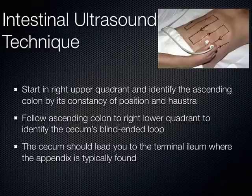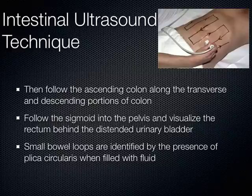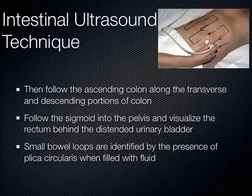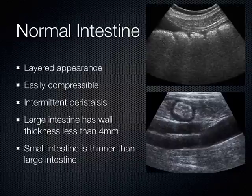You sort of follow that ascending colon down to the right lower quadrant, and that's where you expect to see the cecum with this blind-ended loop, which brings you to the terminal ileum where the appendix juts off. Once you're at the appendix, you can go back up the ascending colon and then go across the transverse, down the descending portion of the colon. You'll see the sigmoid down in the pelvis, and the rectum is very easy to see almost always — it's right behind a nice fluid-filled bladder. To try to differentiate small bowel from large bowel is difficult to do with air-filled loops in normal individuals, but when patients have disease states you can really make out the plicae circulaire.